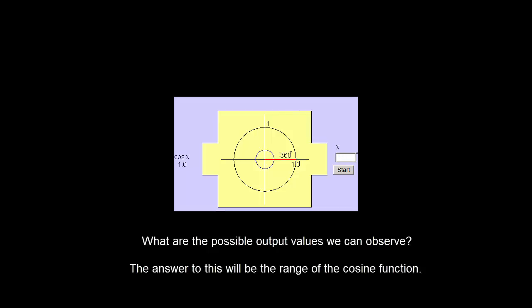Now notice I can also get negative values out. For example, if I pick 120 degrees. Now I have a left movement, so it's negative, of 0.49, well, negative 0.5.